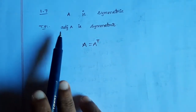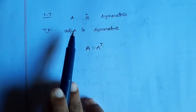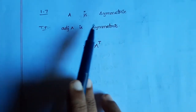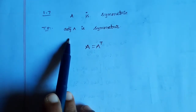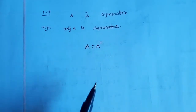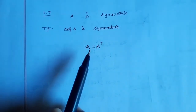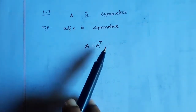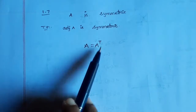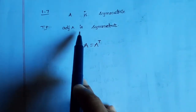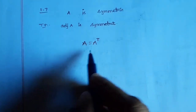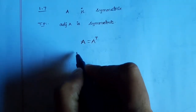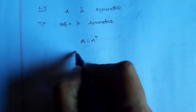We need to prove adjoint A is symmetric. So given A is equal to A transpose. Now, take adjoint on both sides.